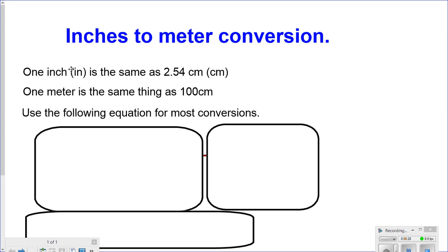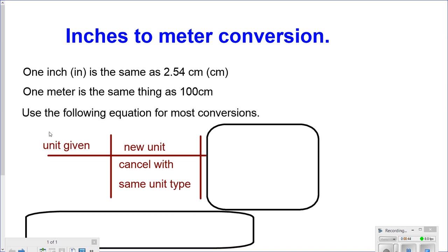One inch equals 2.54 centimeters. We know that one meter equals 100 centimeters, which means that meter is larger than centimeters by 100 times. For most equations, we use the following equation.